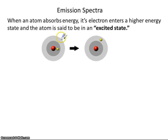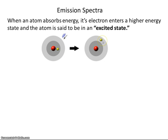As energy comes into the atom, the atom's electron jumps up to a higher energy level, which is what we see here. Now that this electron is in a higher energy level, we say that this atom is in the excited state.